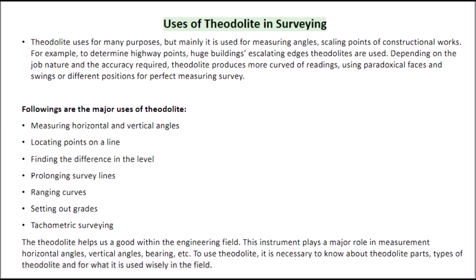Uses of Theodolite in Surveying. Theodolite is used for many purposes, but mainly for measuring angles and scaling points of constructional works. For example, to determine highway points and huge buildings, theodolites are used. Depending on the job nature and the accuracy required, theodolite produces more accurate readings using different faces and positions for perfect measuring survey. The following are the major uses of theodolite.